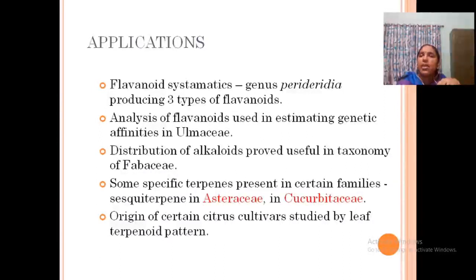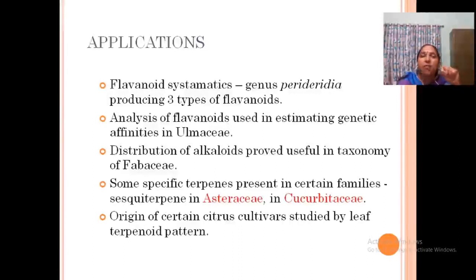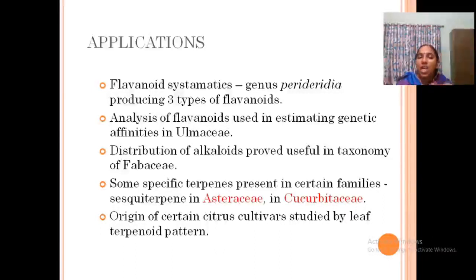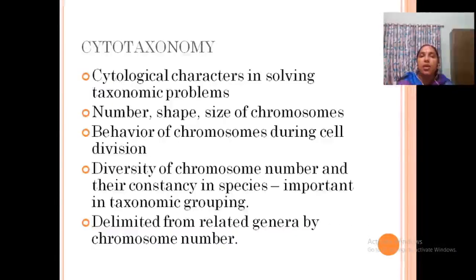Perideridia produces three types of flavonoids. In Alliaceae, flavonoids help in describing its affinities. In Fabaceae, alkaloid distribution is also very significant. Asteraceae and Asclepiadaceae share some specific terpenes. The next branch of evidence is cytotaxonomy — the application of cytology in the study of taxonomy.